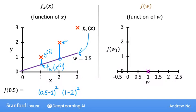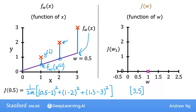For the third example, the error is (1.5 minus 3) squared. Summing all of these terms gives 3.5. We then multiply by 1 over 2m, where m is the number of training examples — here m equals 3. So this equals 3.5 divided by 6, and the cost J is about 0.58. Let's go ahead and plot that point on the right.